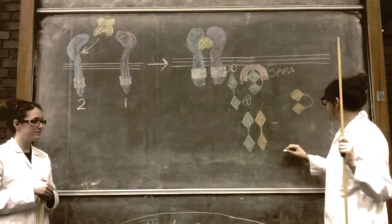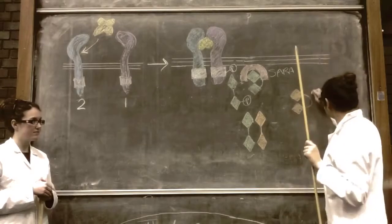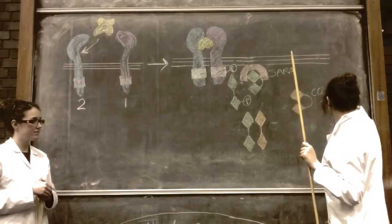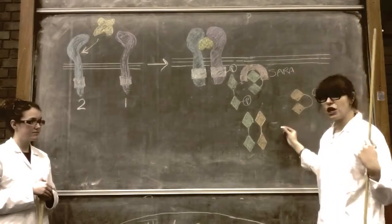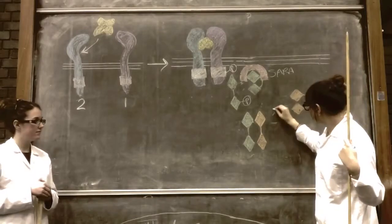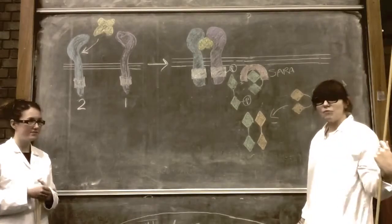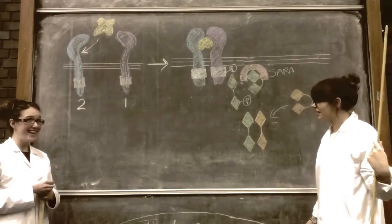It comes together with the co-SMAD. These two oligomerize. But Jasmine, then what happens? They go to the nucleus.